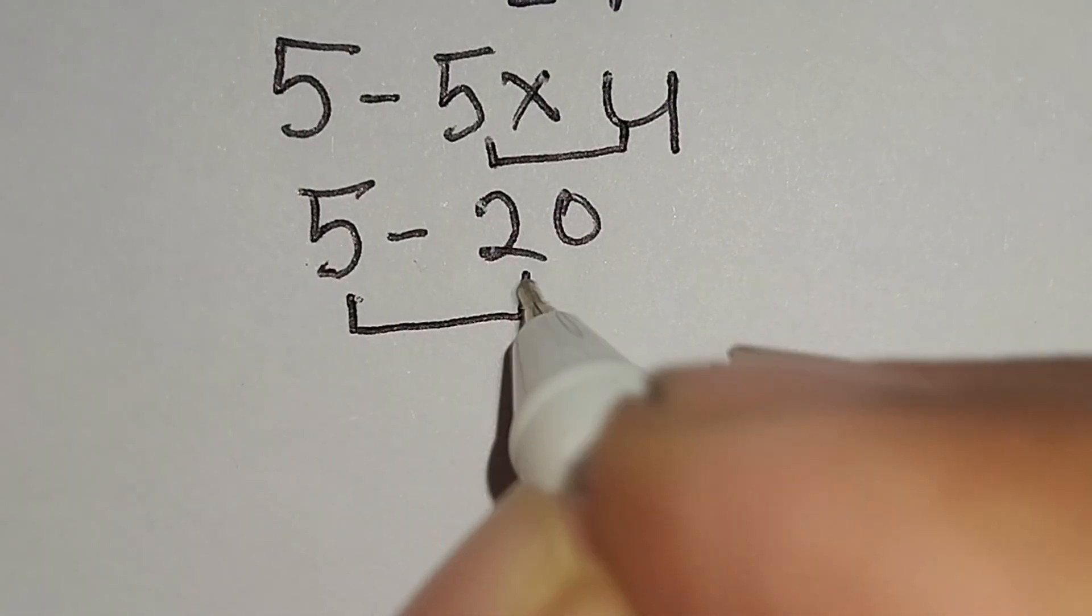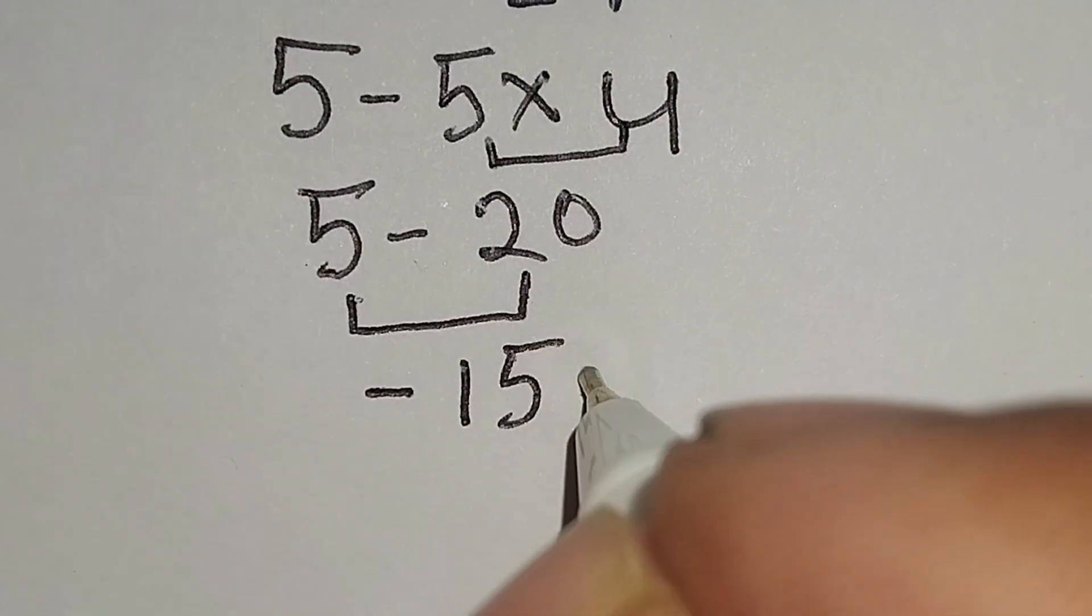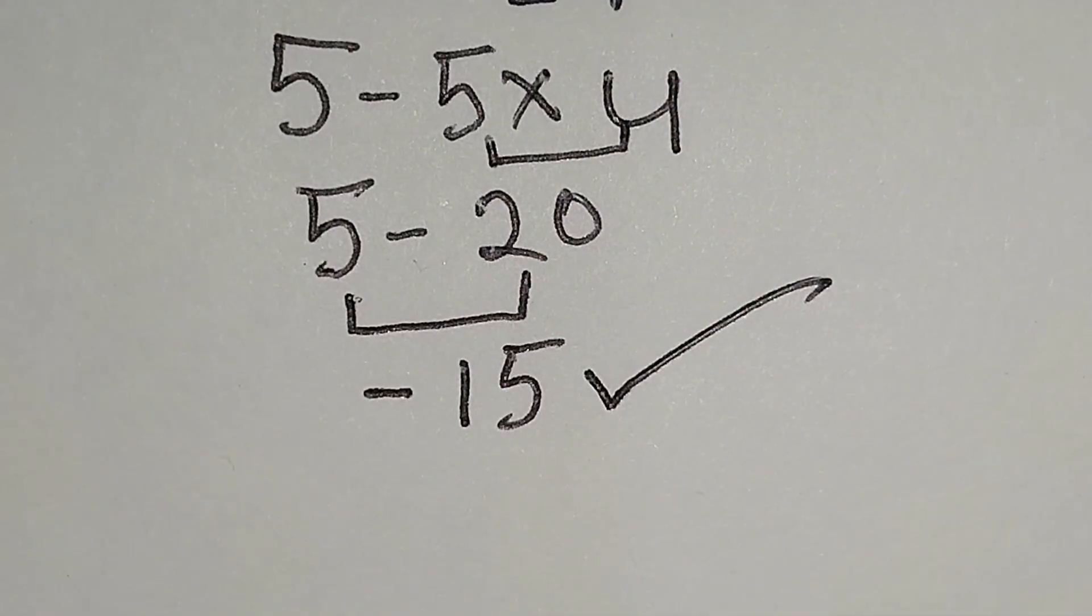5 minus 20 gives us minus 15, and this is the correct answer. Thanks for watching the video. Please like, comment, share, and subscribe.